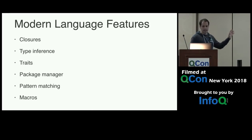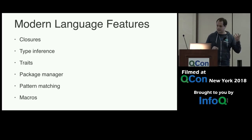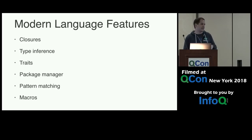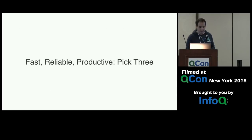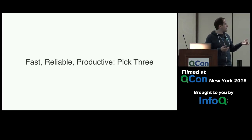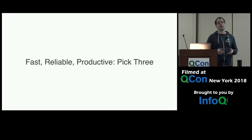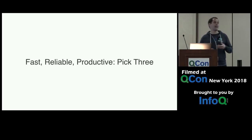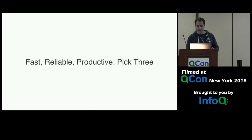Rust has a ton of other language features — it's a pretty nice language. But ownership is the main reason for Rust. Its mission statement is: fast, reliable, productive. The Rust developers are trying to give you a language that never compromises on performance while at the same time letting you write as few bugs as possible, without getting in your way. It's a tough order.